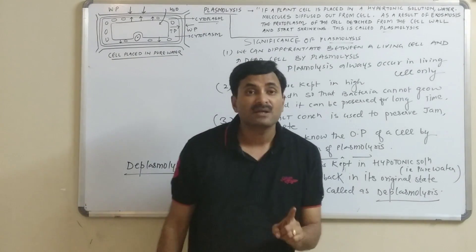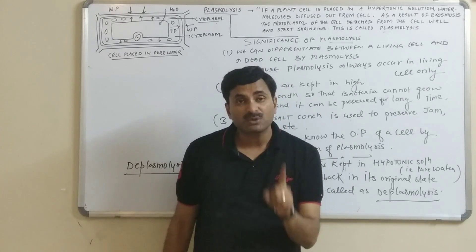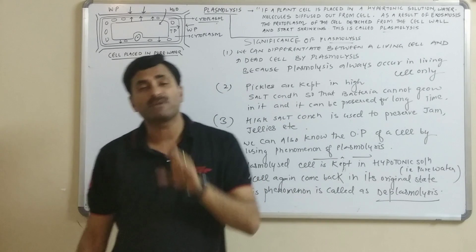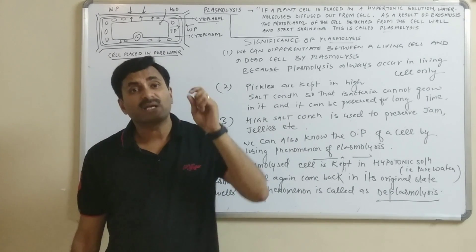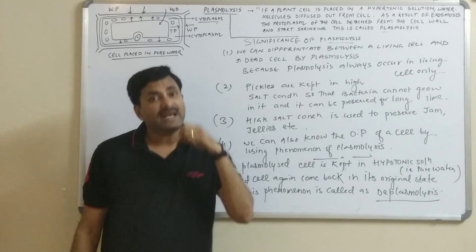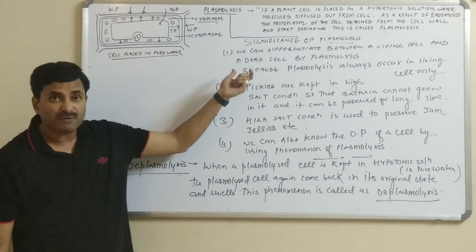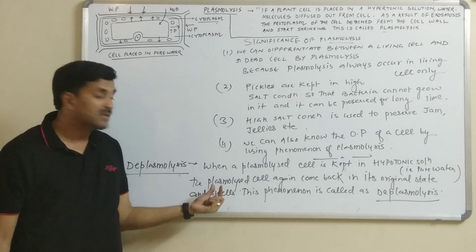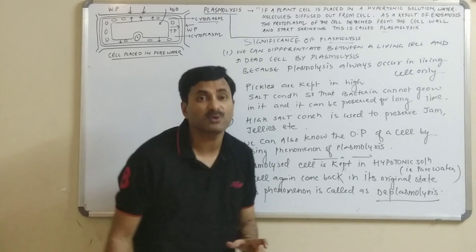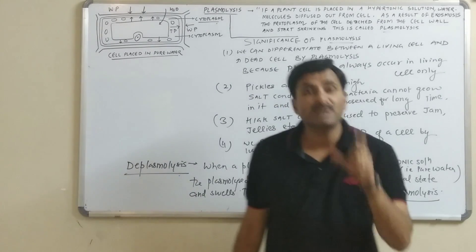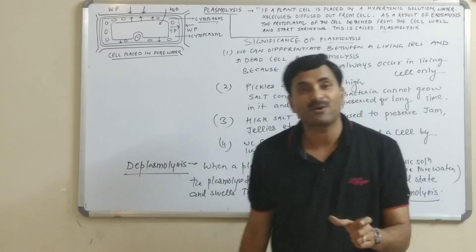This was the complete video on plasmolysis. We discussed the plasmolysis definition, the three steps — limiting plasmolysis, incipient plasmolysis, and evident plasmolysis — the significance of plasmolysis, and deplasmolysis. This topic is very important from an examination point of view. Keep watching for more videos on plant physiology.